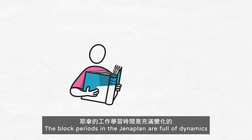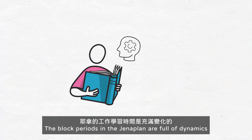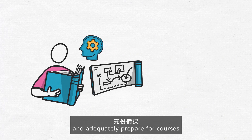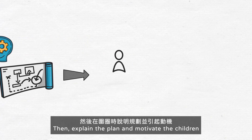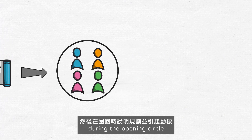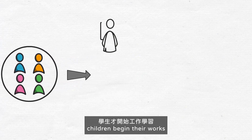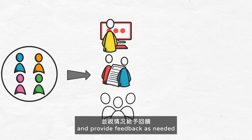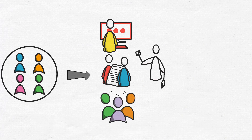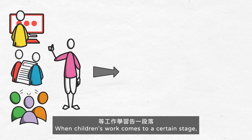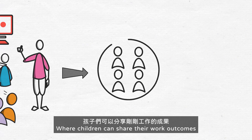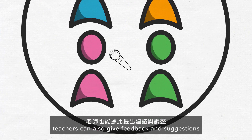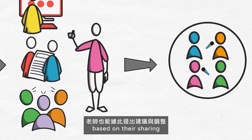In Jena's work and learning time, there is a clear cycle: first the teacher determines goals and prepares thoroughly, then during the opening circle the plan is explained and motivation is sparked. Students then begin working. During the process the teacher continuously observes and gives feedback as needed. When the work session concludes, it moves into a closing circle where children can share their results and the teacher can offer suggestions and adjustments.